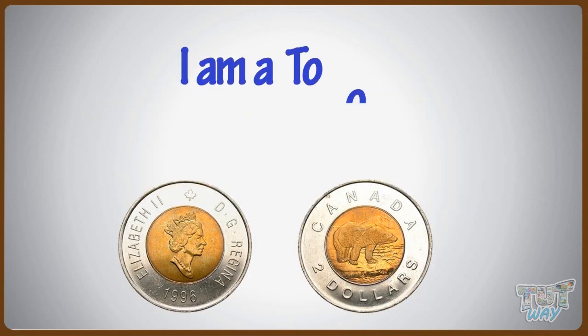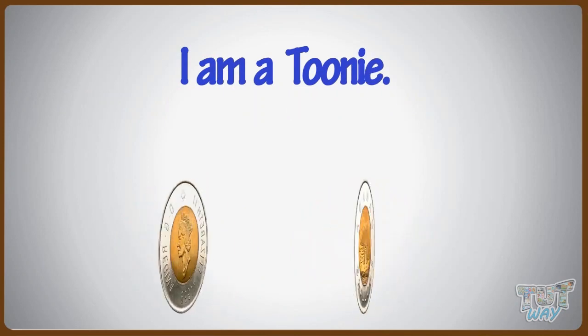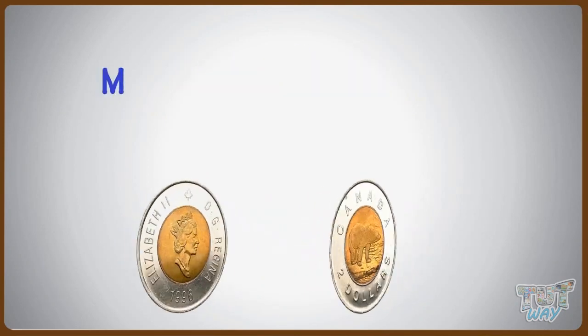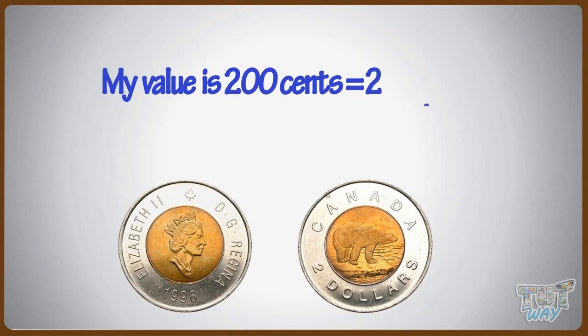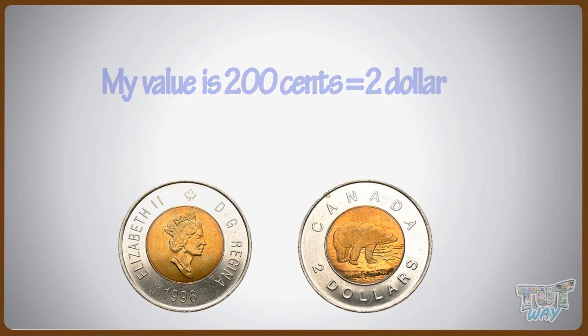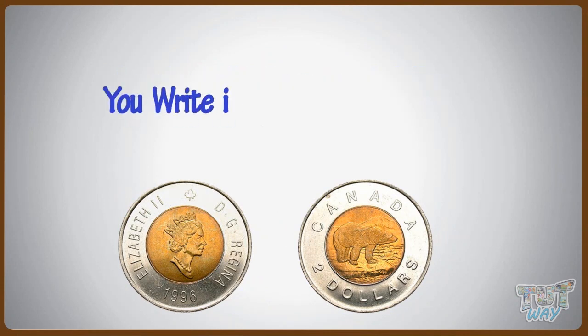I am a toonie. My value is two hundred cents, which is equal to two dollars. You write it like this.